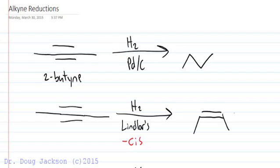There are other catalysts that can do the same thing, Lindlar's being one of them. So it adds in a sin fashion, forms a cis alkene and stops right there. We end up with cis or Z-2-butene.